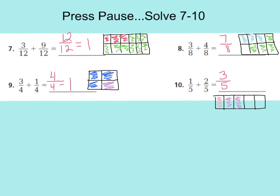Okay, let's go over our answers. For number 7, you should have said that we keep our denominator 12 the same, and 3 twelfths plus 9 twelfths is 12 twelfths, which is equal to 1 whole. Here's my model. For number 8, I should have said that 3 eighths plus 4 eighths is 7 eighths. Here's my model showing that. For number 9, 3 fourths plus 1 fourths is 4 fourths, which is also equal to 1 whole. And for number 10, 1 fifths plus 2 fifths is 3 fifths, and here's the model showing that. I hope that you got those all right.